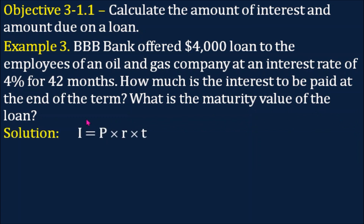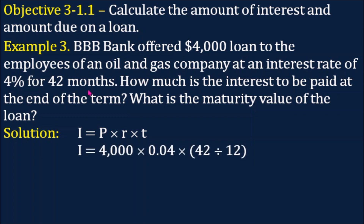First, we are going to solve for the interest using the formula P times R times T. Our P, the amount borrowed, is $4,000. Our interest rate is 4%, written in decimal form as 0.04. Then our time should be in years, so 42 months divided by 12. Performing the operation, the interest is $560.